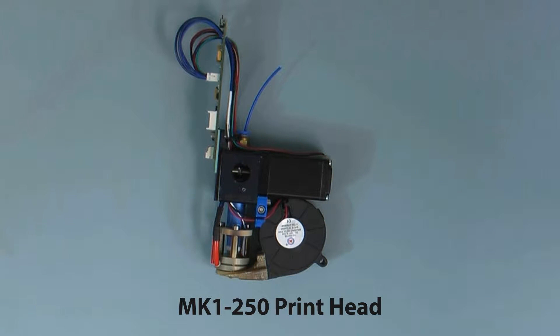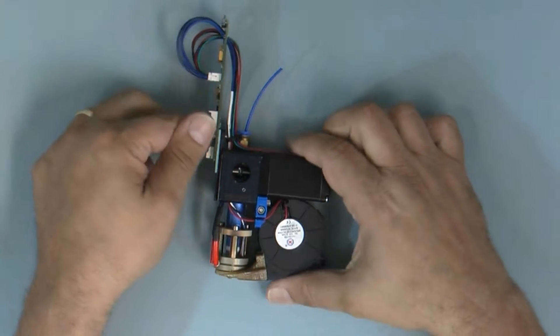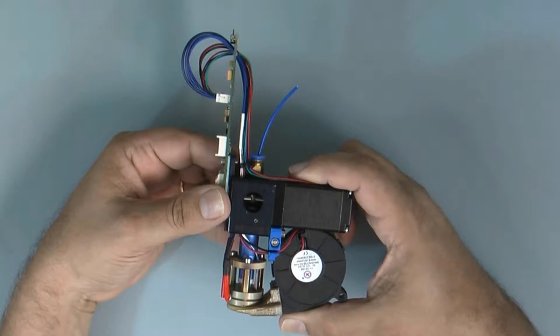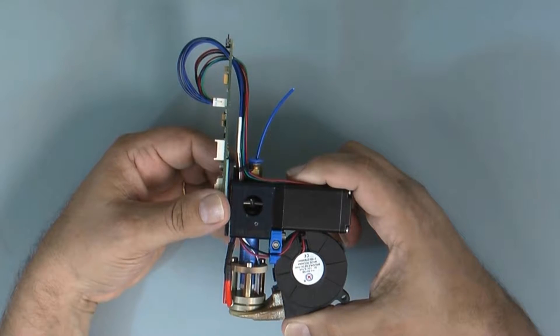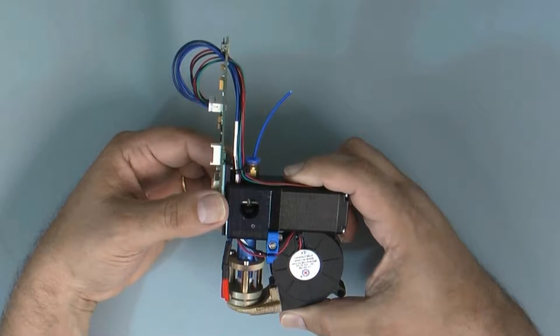All right, I'm going to give you an overview of the MK1-250 printhead. This is our high rail 3D printheads for 1.75 millimeter filament at up to 250 degrees C.